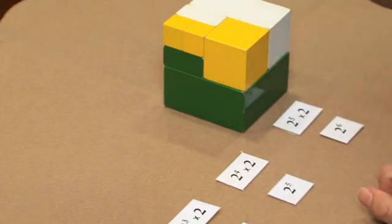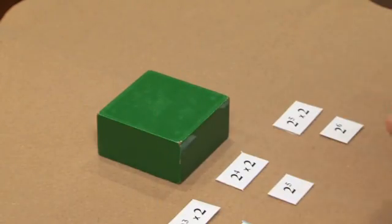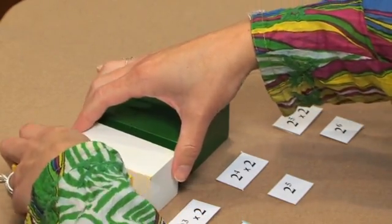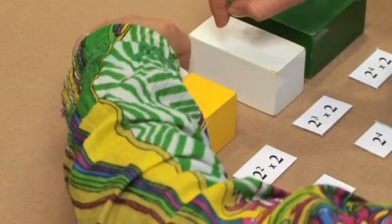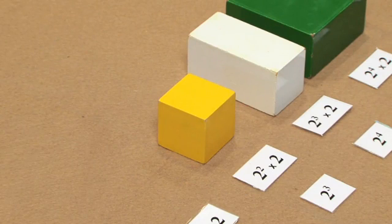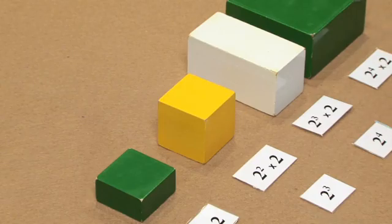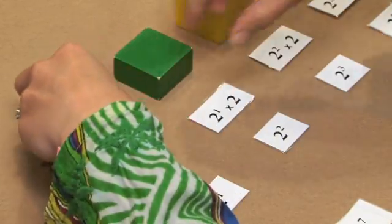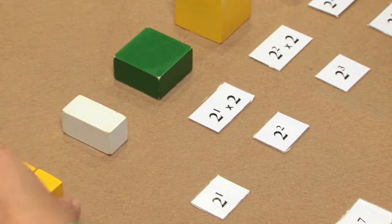So here we have two to the power of six. Then we have two to the power of five. This shows us two to the power of five. This shows us two to the power of four. This shows us two cubed or two to the power of three. We have two squared or two to the power of two. We have two to the power of one. And then what we're left with are our two units.